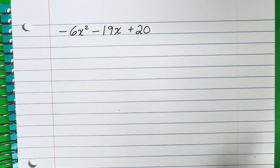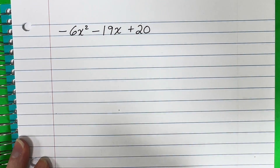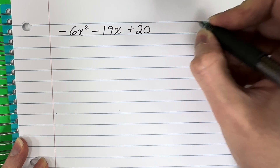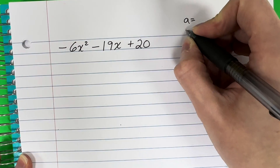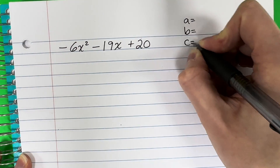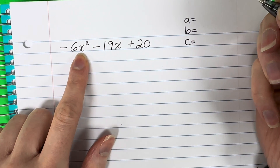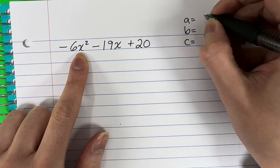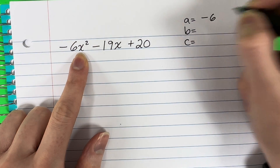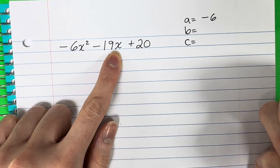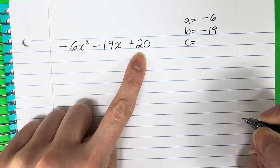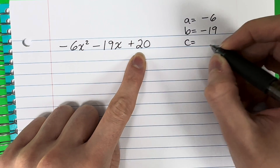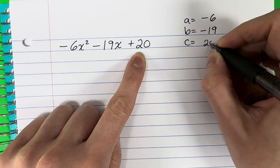The first thing you're going to do is decide what your A, B, and C values are. A is the number with the letter squared, so A is negative 6. B is the number with the letter but no exponent — that is negative 19. And C is the number without a variable, which is 20. Don't forget your negatives.